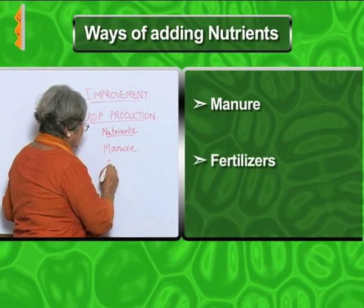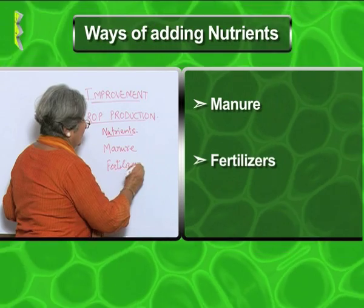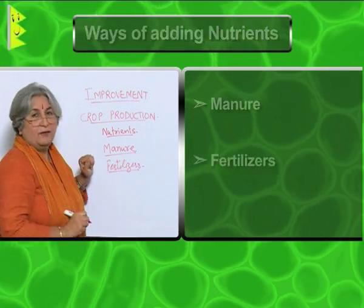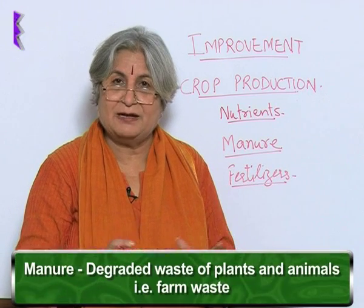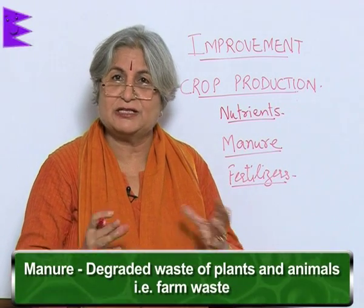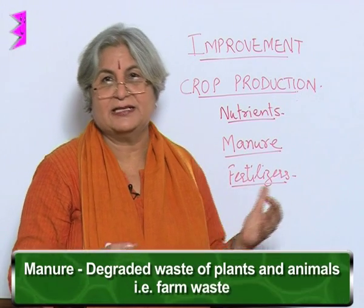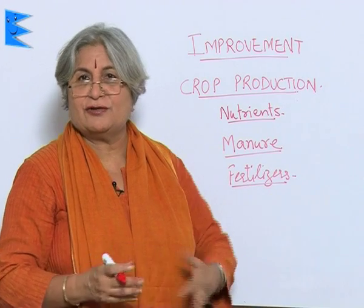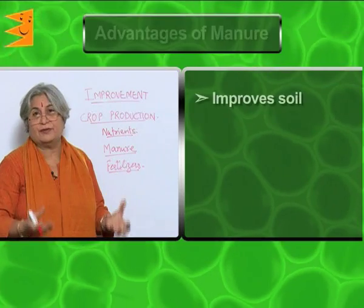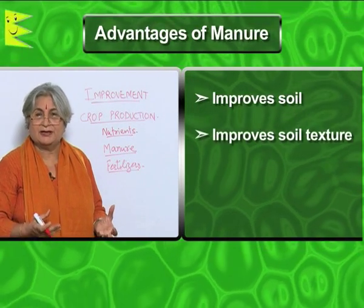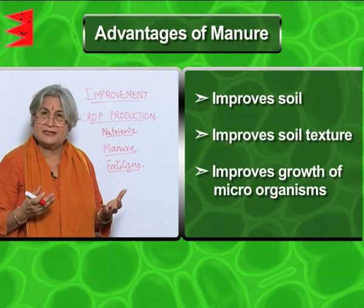The way to add nutrients is through manure and fertilizers. Manure is formed when waste from plants and animals — dead plants, branches, and twigs, basically farm waste — degrades. You are essentially recycling the waste. It has very little cost but really improves the soil: it improves soil texture, adds organic matter, and improves the growth of microorganisms.